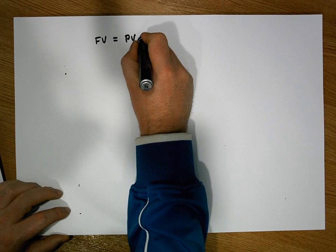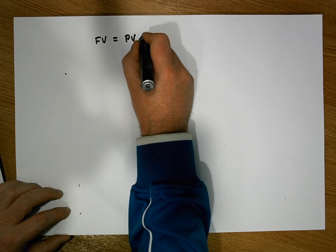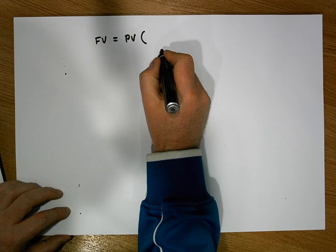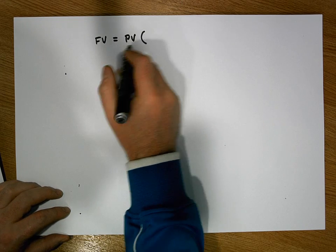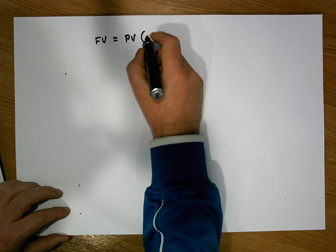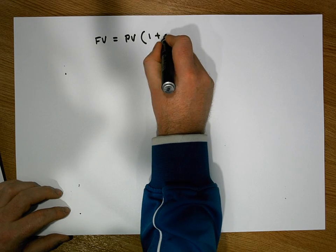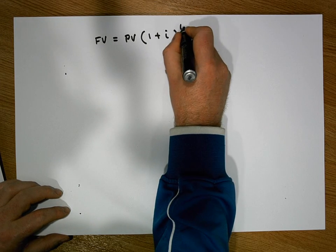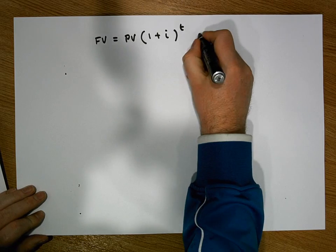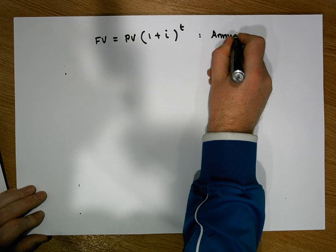If interest is applied using a compound interest method, and if it's applied annually, well then the future value is equal to PV times 1 plus I raised to the power of T. And this is the annual case.